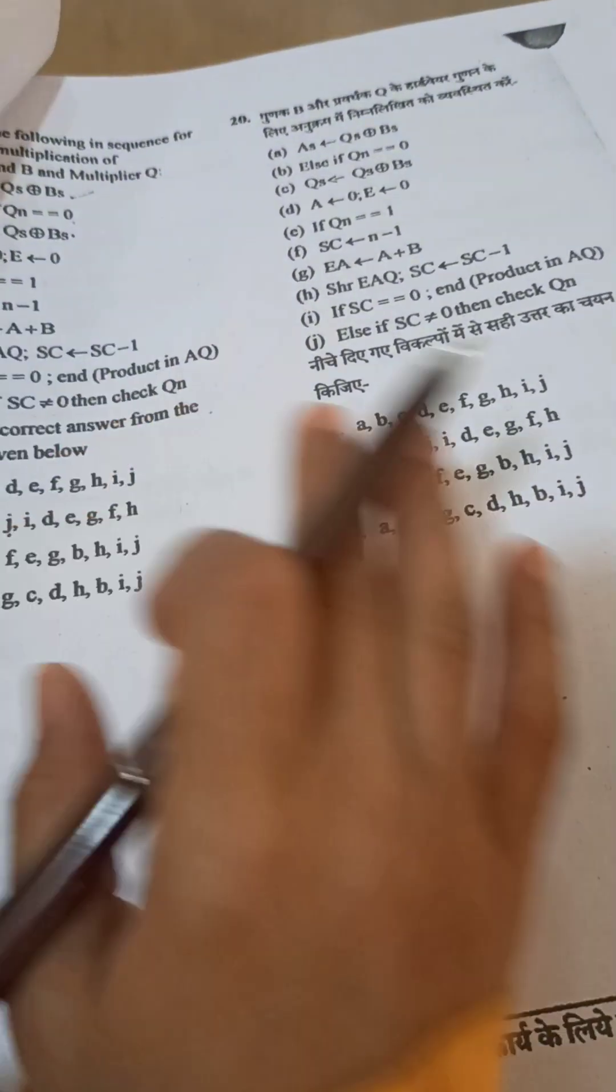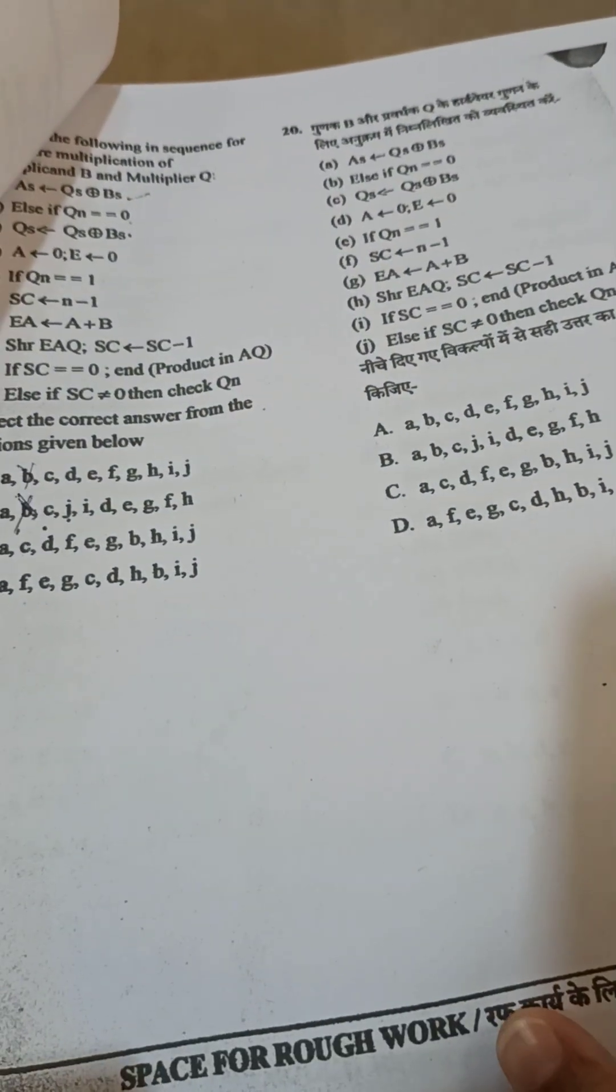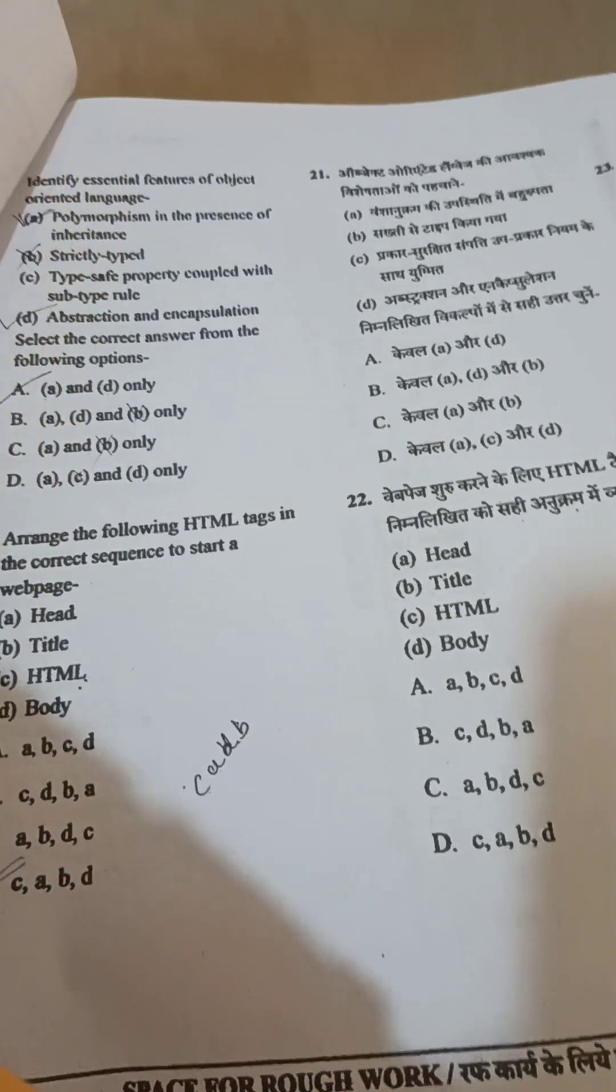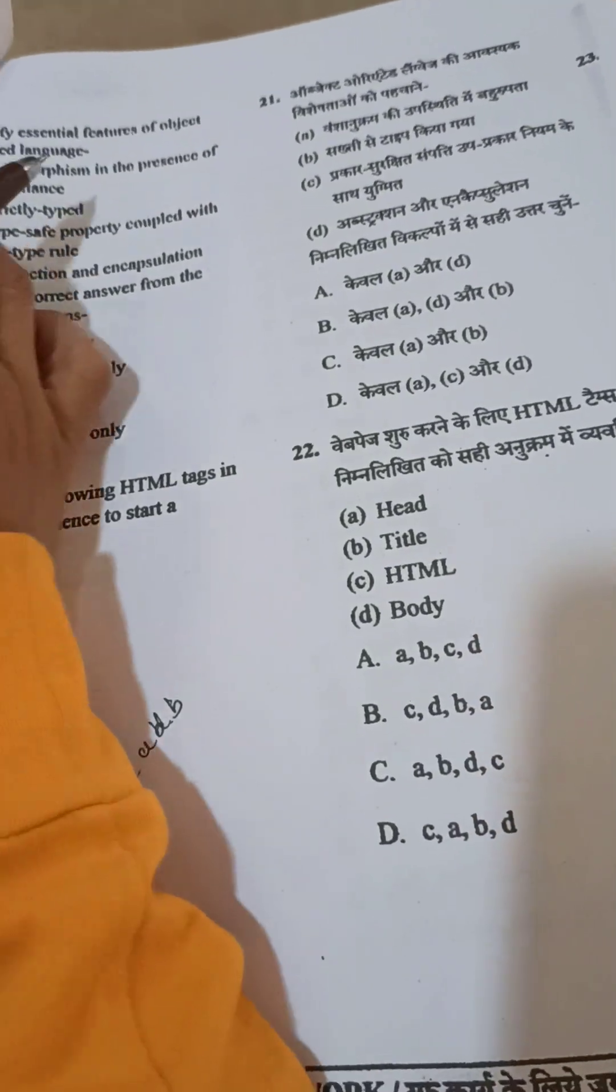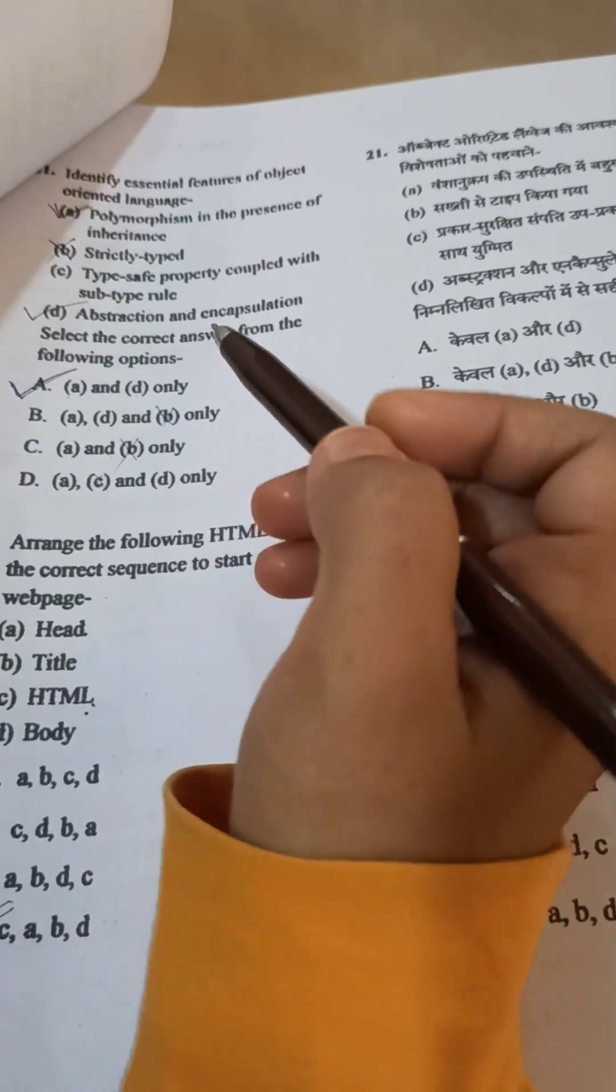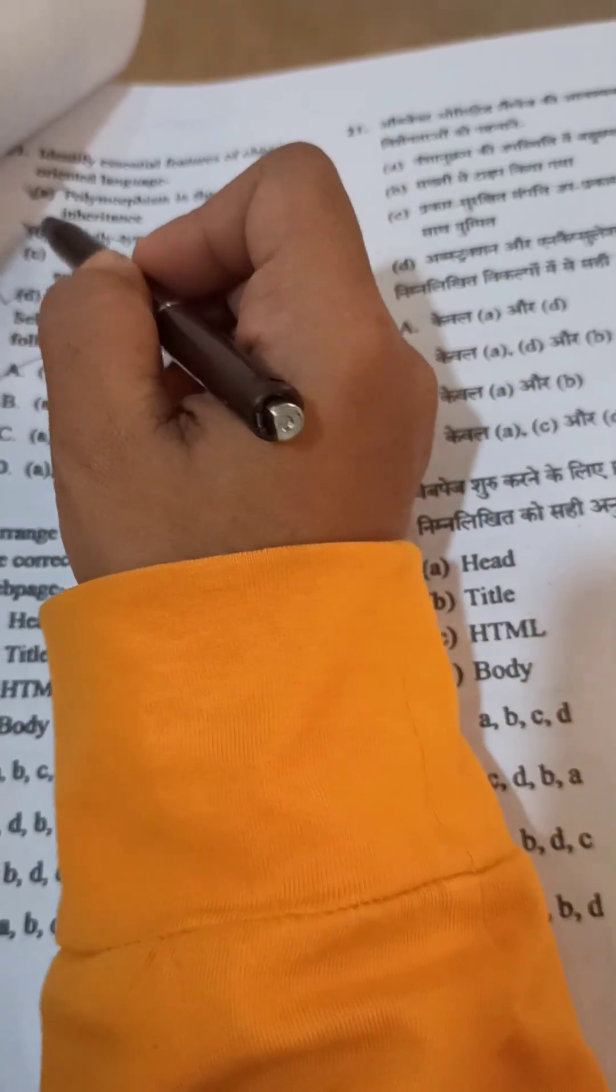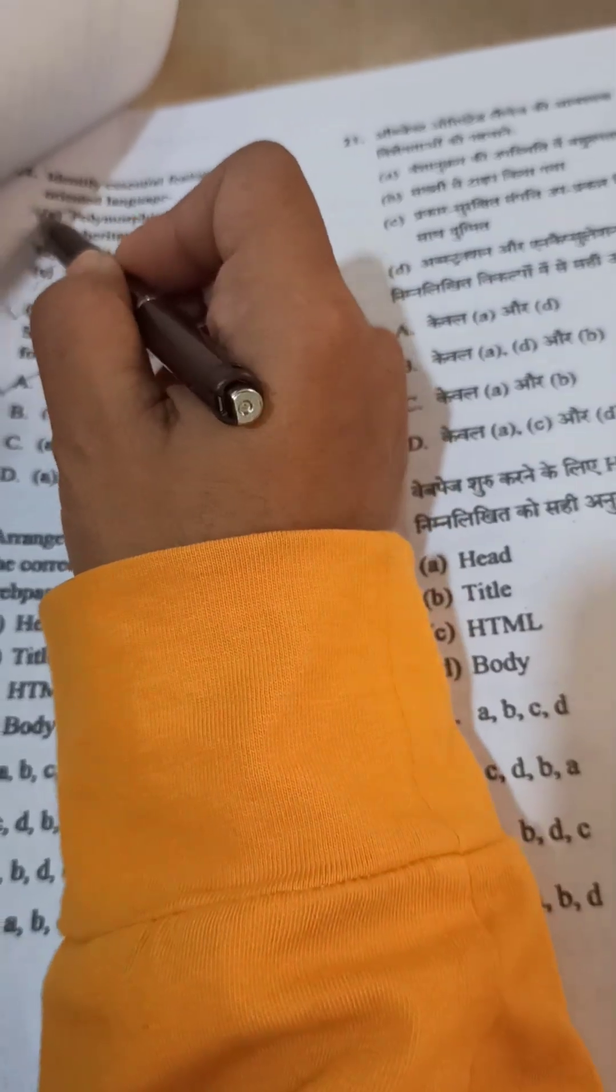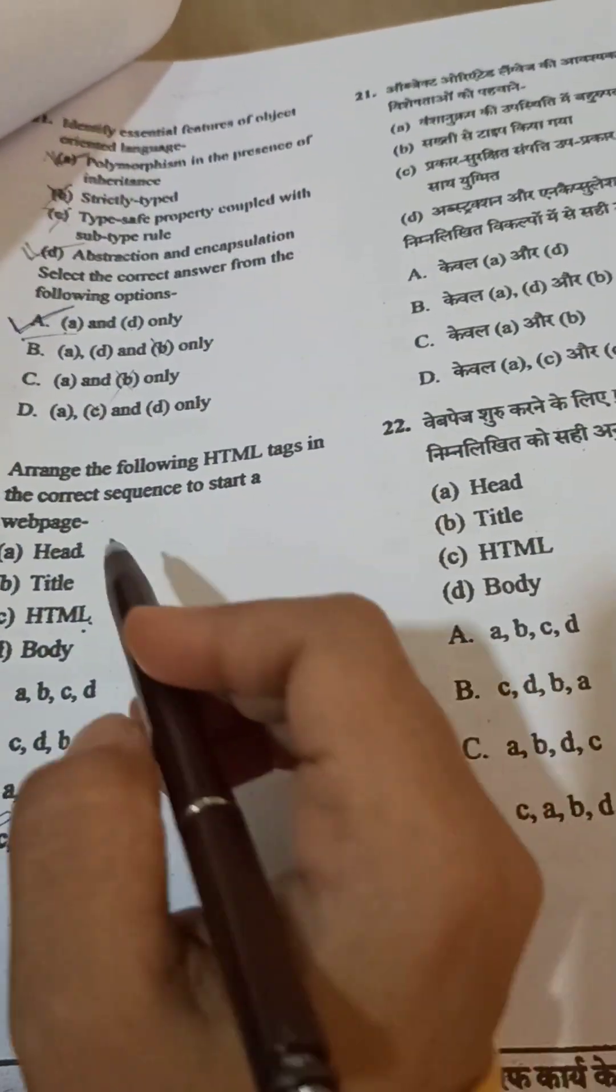Now here just I was solving. I have little bit doubt here. This one question number 21. Definitely option A should be the correct answer because this one and this one is wrong. Option A and D is correct. So this one will be the correct answer.